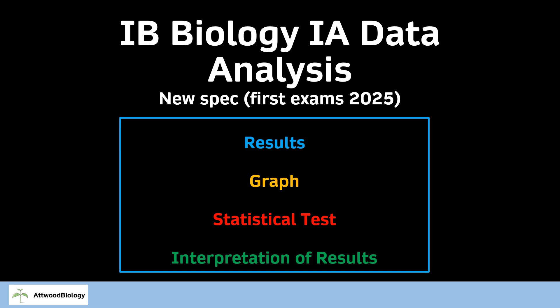Hi, welcome to the walkthrough of the IB Biology IA Data Analysis section. This is the second section in your IA, worth six marks again, split into a few sections: the results, the graph, stats test, and the interpretation of your results.